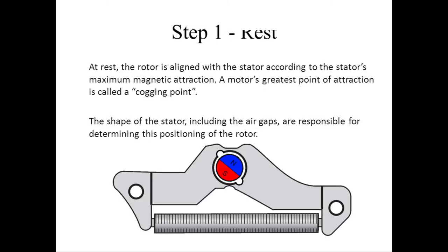Step 1: Rest. At rest, the rotor is aligned with the stator according to the stator's maximum magnetic attraction. The motor's greatest point of attraction is called a cogging point. The shape of the stator, including the air gaps, are responsible for determining its positioning of the rotor.